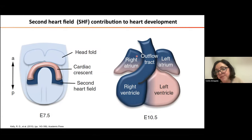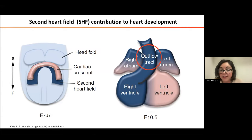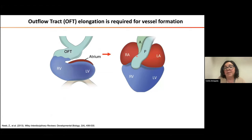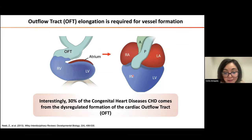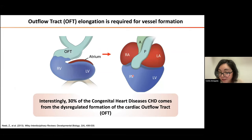During my postdoctoral work, I have been interested in how the outflow tract elongates, because the outflow tract gives rise to the two principal vessels that connect the embryo with the root of the heart — the aorta and the pulmonary trunk. Interestingly, 30% of congenital heart diseases come from the dysregulated formation of the cardiac outflow tract.